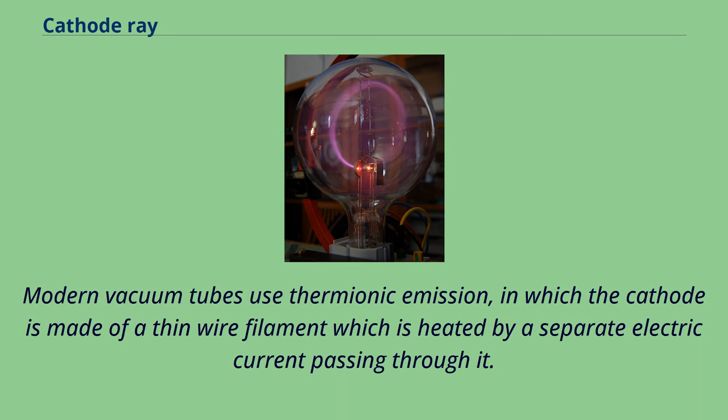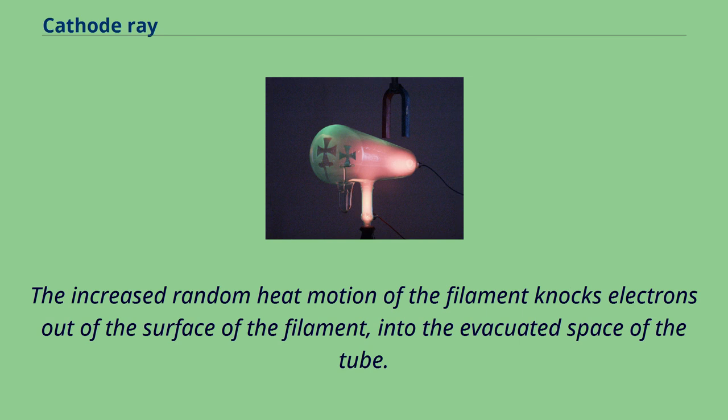Modern vacuum tubes use thermionic emission, in which the cathode is made of a thin wire filament which is heated by a separate electric current passing through it. The increased random heat motion of the filament knocks electrons out of the surface of the filament into the evacuated space of the tube.